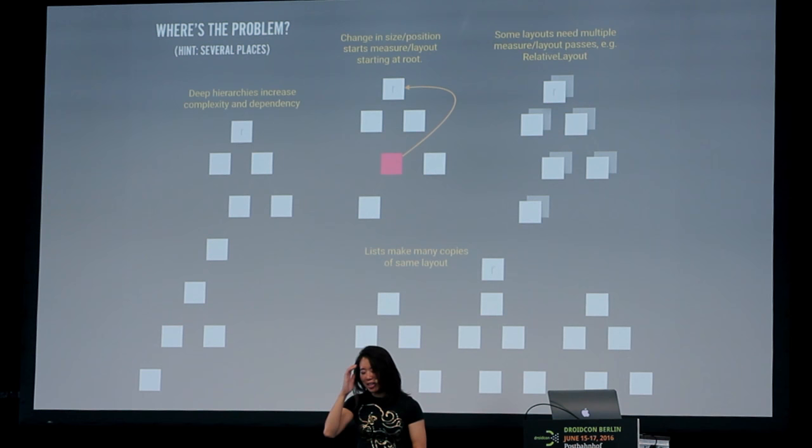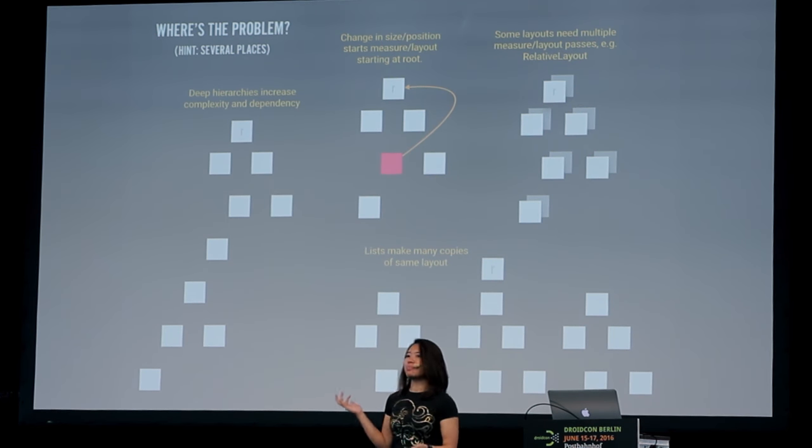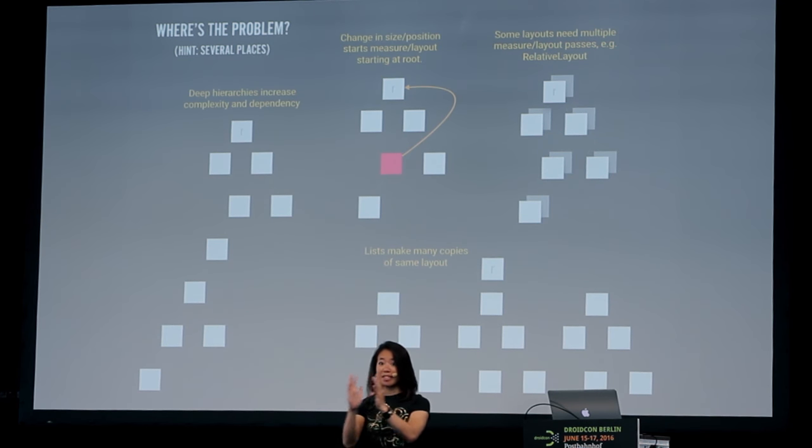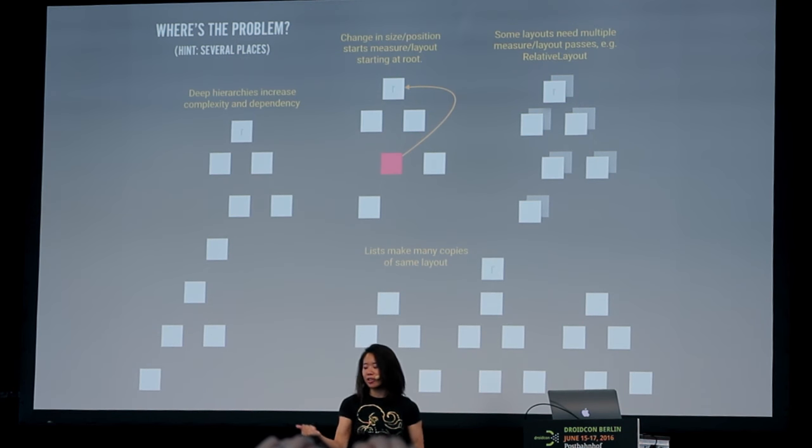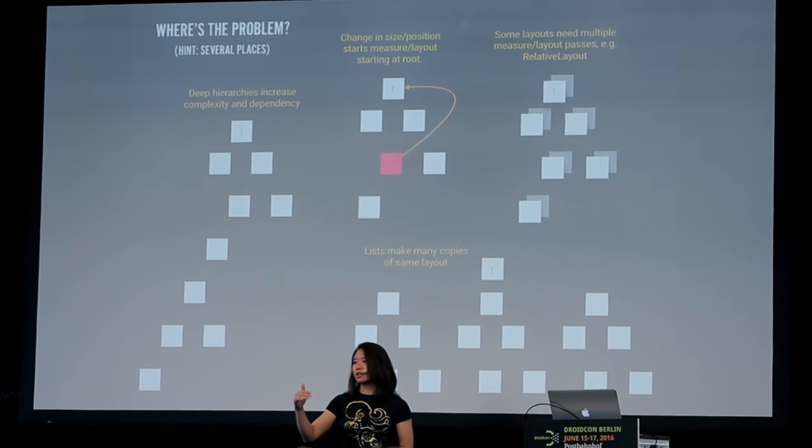Lists are everywhere in Android. And lists can be totally great — RecyclerView is awesome. But a list takes a view and copies it several times over. If you have a really efficient list item, no problem. But if your list items are dense, where you're trying to show a lot of information, that can get pretty complex — and you're multiplying that complexity several times over. Each of these things — depth, change, platform behavior, and lists — can cause performance issues. They all come together, and when things start getting more complicated, these problems can start piling up. And all of a sudden, boom, you have performance problems.